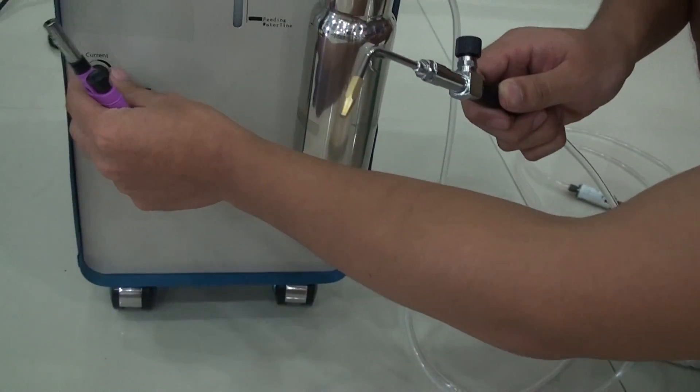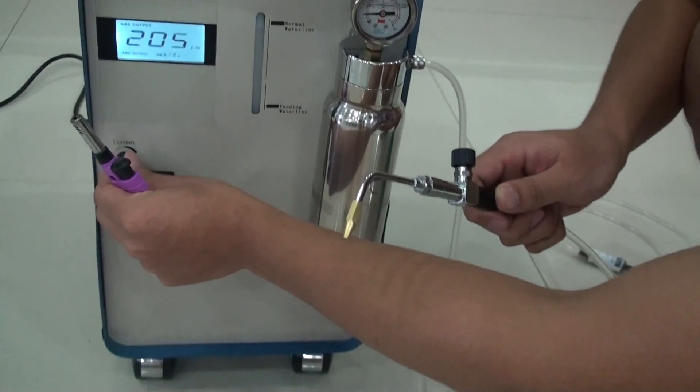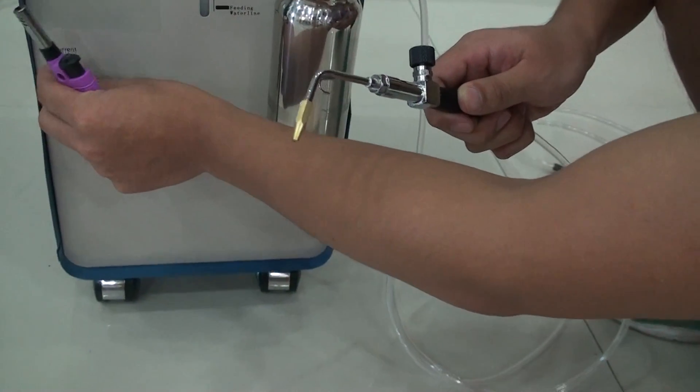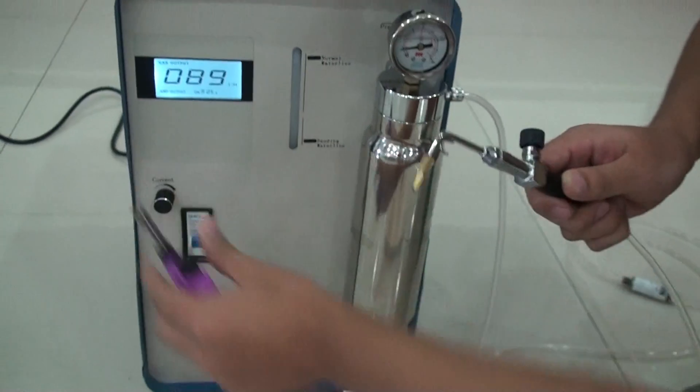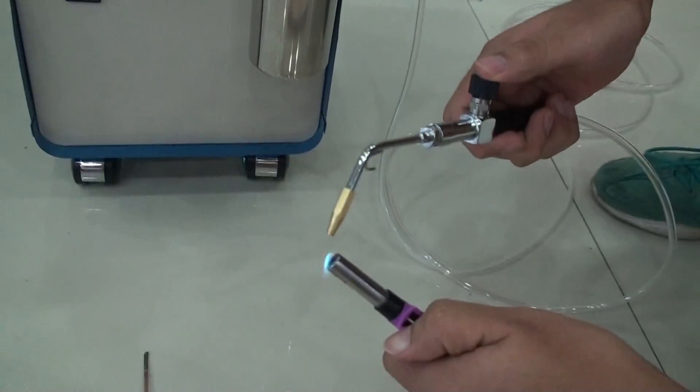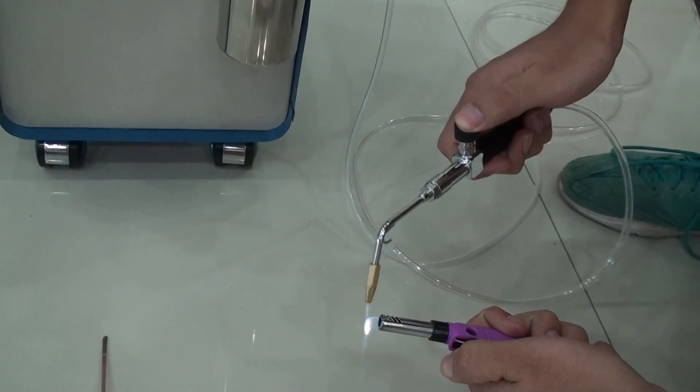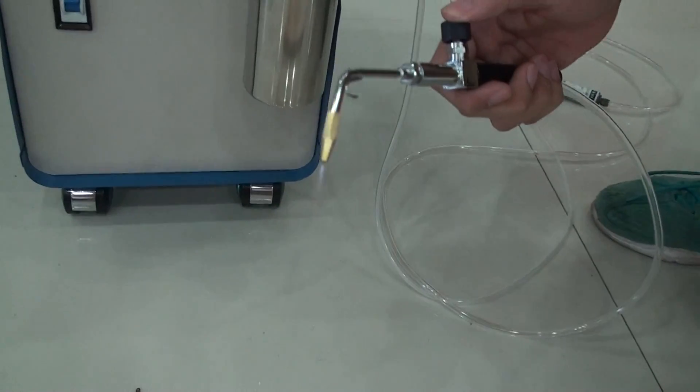You've seen that the gas output is too large. We have to slow down the gas output. Now you can see the flame is coming out.